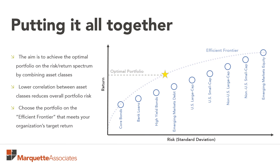A mathematical formula will be used to establish the efficient frontier, which is shown as the dotted curved line in the graph. The investor will choose the point on that dotted line which satisfies their risk and return goal. The efficient frontier mathematically determines the mix of all these different asset classes which offer the optimal return, risk, and correlation to achieve this goal. This is what we spend the most time with our clients on — deciding what that optimal mix of asset classes is to achieve their goals.